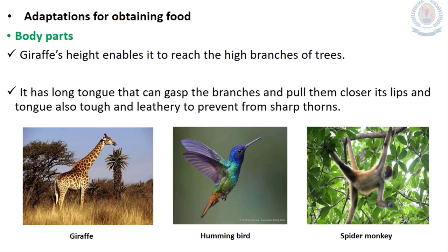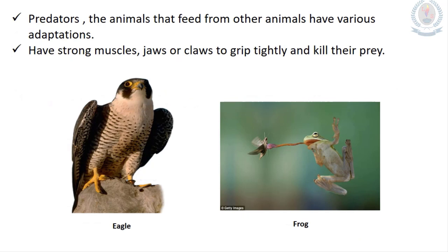The hummingbird, as mentioned before, has a long and curved beak to get nectar from flowers easily. The spider monkey has a flexible tail to move from one tree to another.